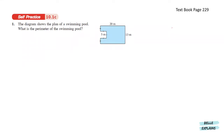Next, self-practice 10.1c. The diagram shows the plan of a swimming pool. What is the perimeter of the swimming pool? Let's label this unknown part here as A. Since this part is also the same length, we can label it as A as well. The sum of these three parts equals to 13 meters. So let's find the value of A: A plus 5 plus A equals to 13, which means 2A equals to 8 and A equals to 4.